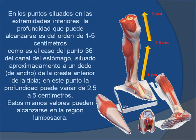En los puntos situados en las extremidades inferiores, la profundidad que puede alcanzarse es en el orden de 1 a 5 centímetros, como es el caso del punto 36 del canal del estómago, que se encuentra situado próximamente a un dedo de la cresta anterior de la tibia. En este punto la profundidad puede variar de 2.5 a 5 centímetros.